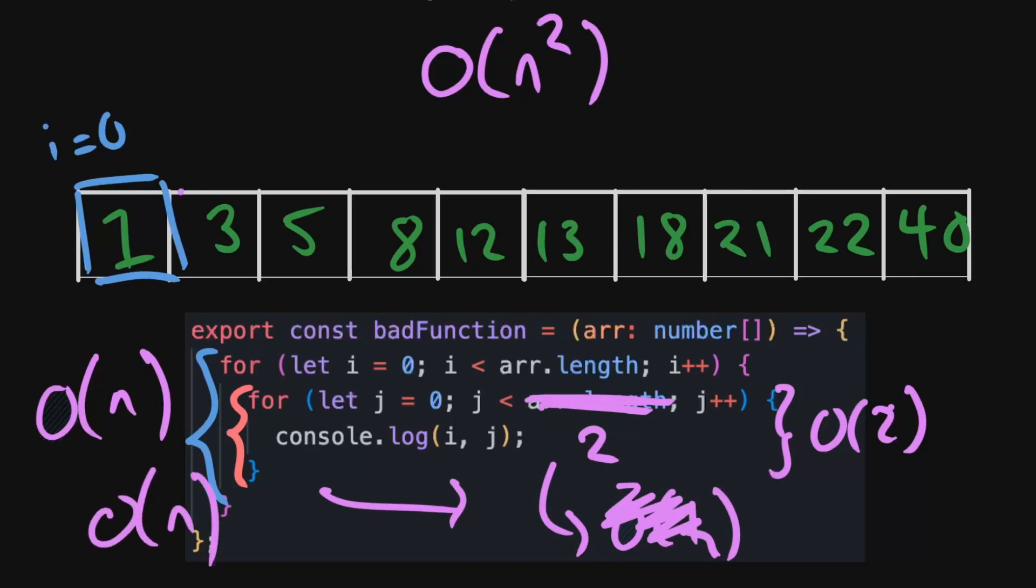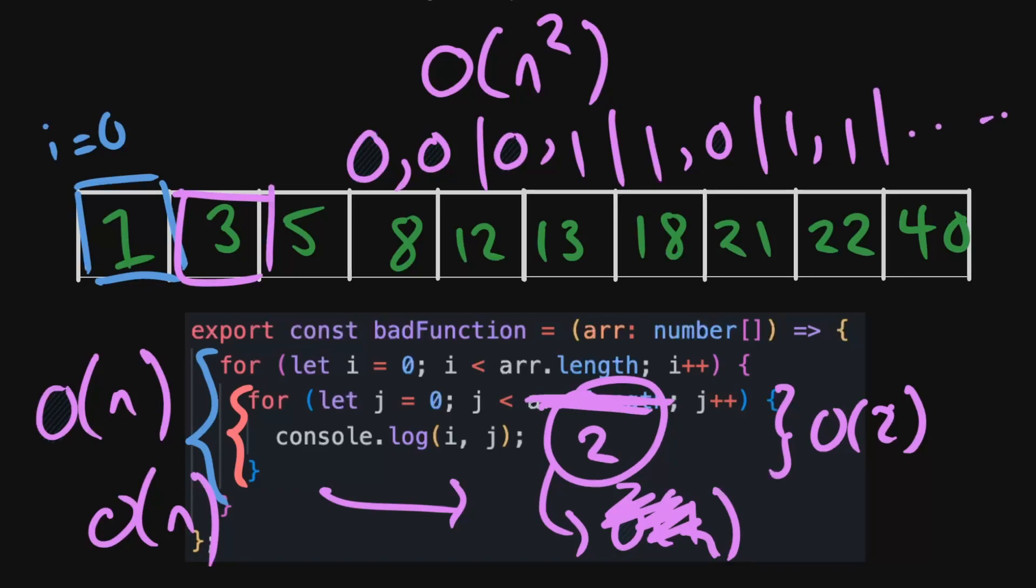Because for every element in here, we are doing 2 operations. What we're printing in this scenario would be zero zero, zero one, and then we'll move on to the next one, because it's just hit 2. And we'll move to one zero, one one, and so on. So for every one of these, we do 2 operations. And we just ignore constants, as I mentioned, so we can treat it as doing 1 operations. And so what we're seeing is for every element, we're doing 1 operation, and there's n of them, so this dumbs down to O(n).